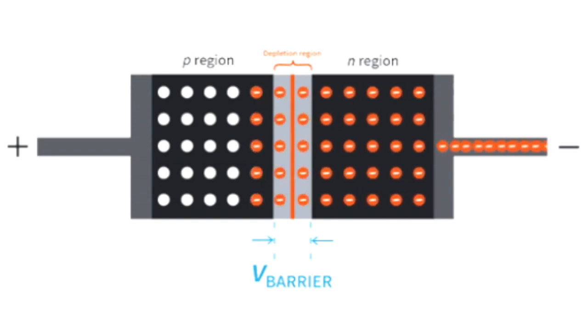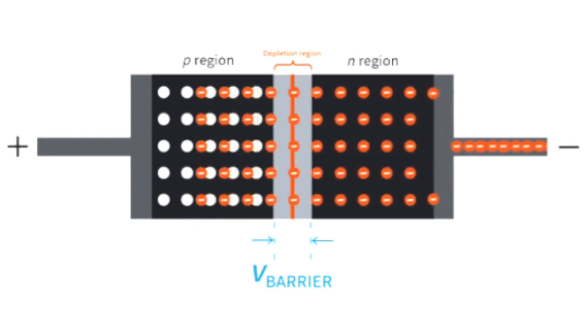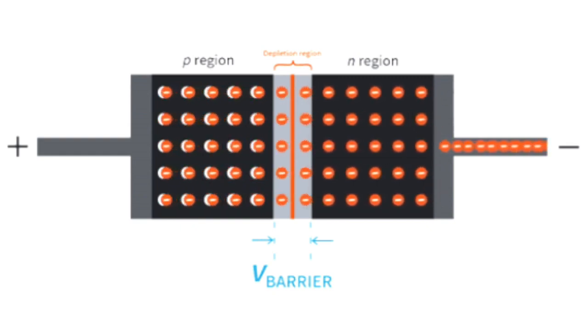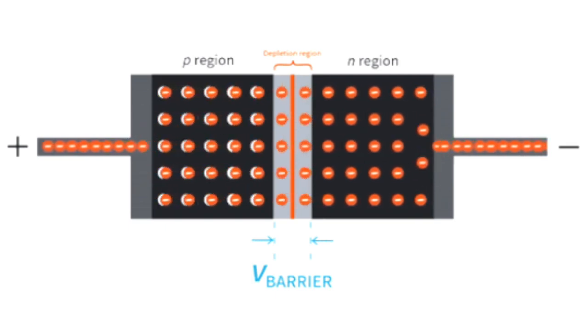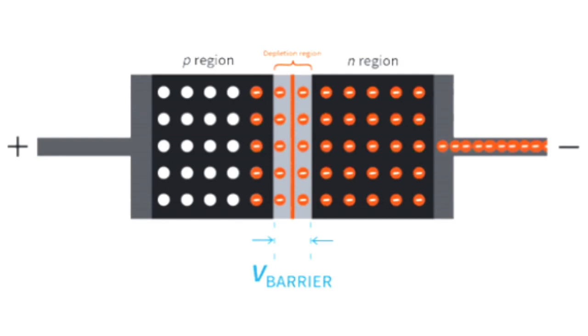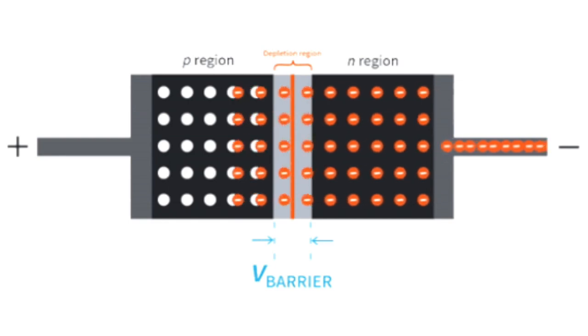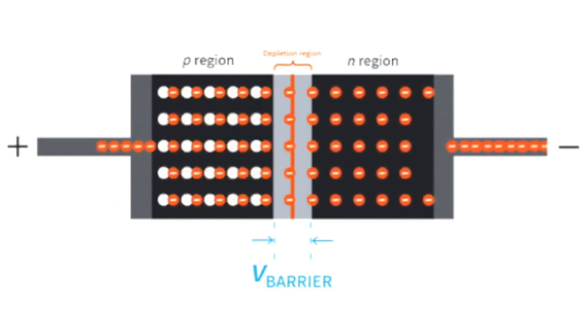The reverse breakdown voltage is the maximum reverse bias voltage a diode can withstand before entering breakdown and conducting heavily in reverse. The unique characteristics of diodes in forward and reverse bias make them essential components in electronic circuits for rectification, voltage regulation, signal processing, and protection against reverse voltage or over voltage conditions.